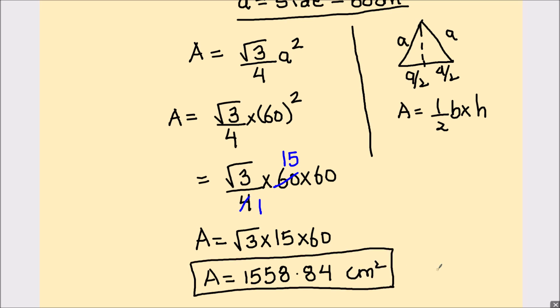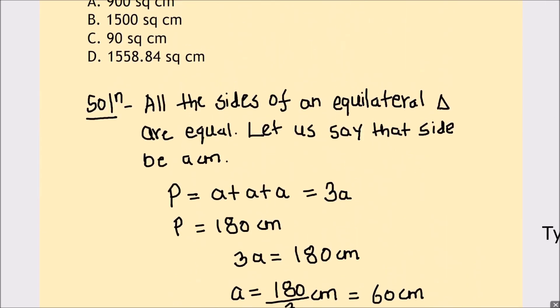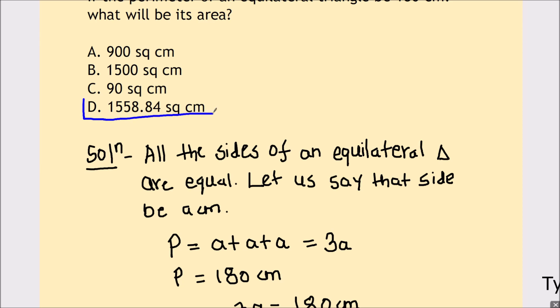This is the area of the equilateral triangle when its perimeter is given. Let's check the options. So option D will be the correct answer.